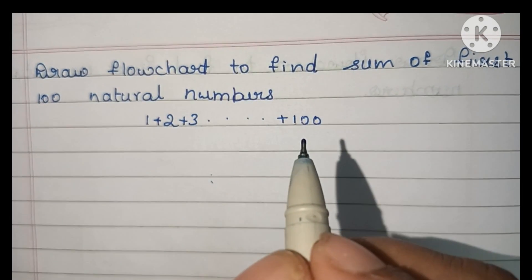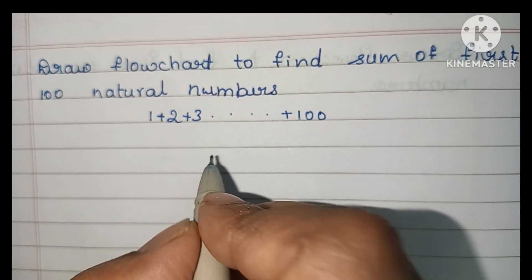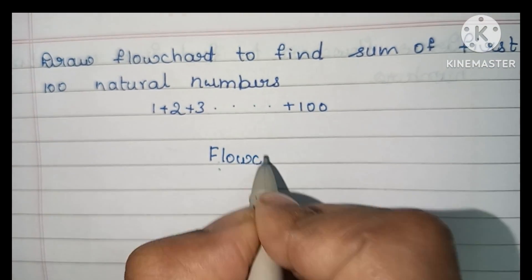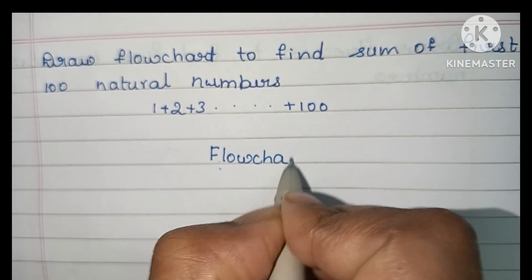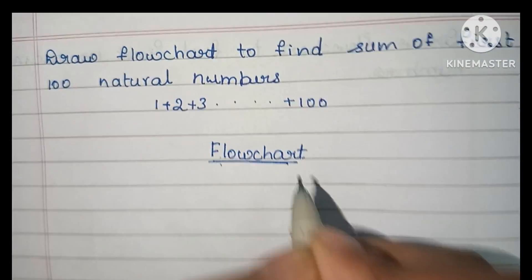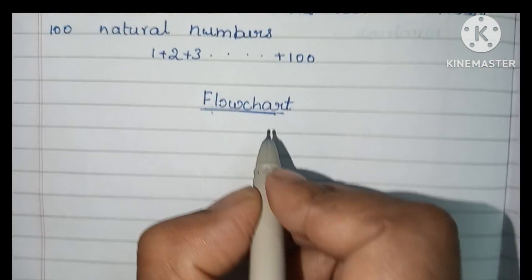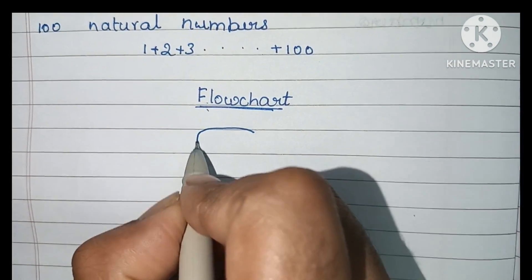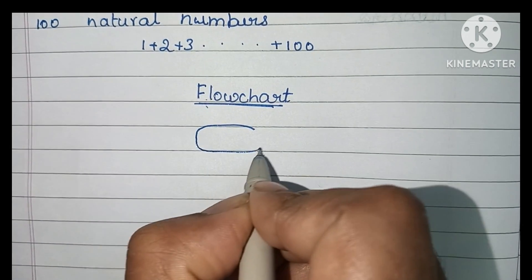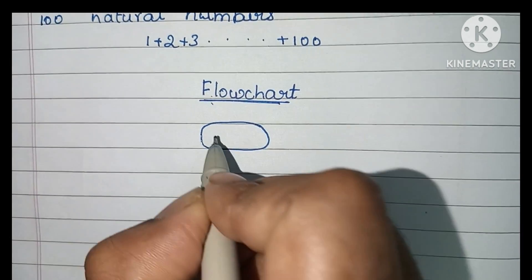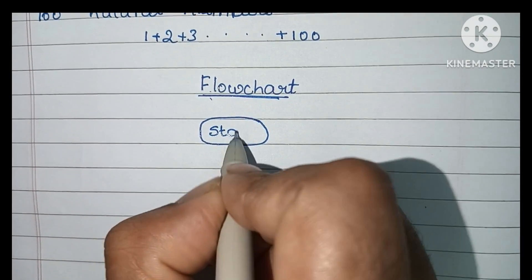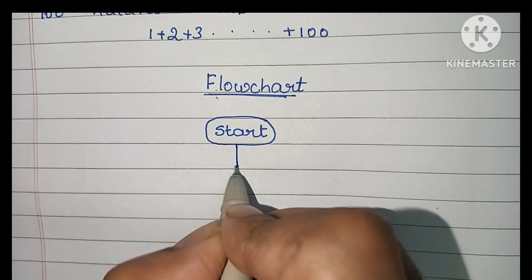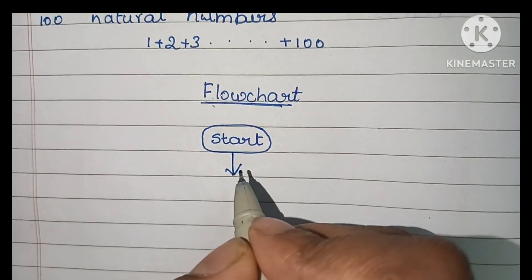A flowchart is a graphical representation of a solved problem. A flowchart starts with a START statement. The START statement is written within an oval shape, so first we have to draw the START statement.